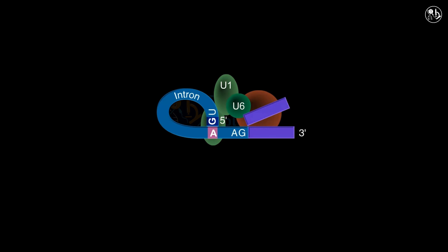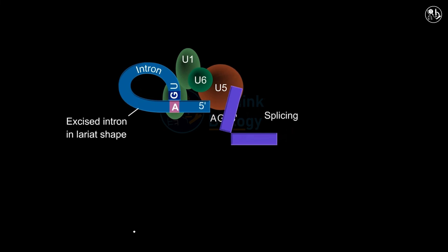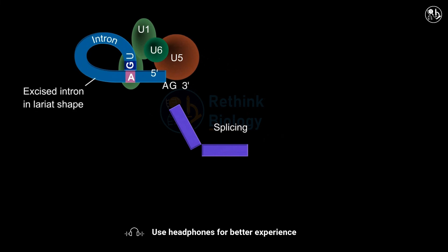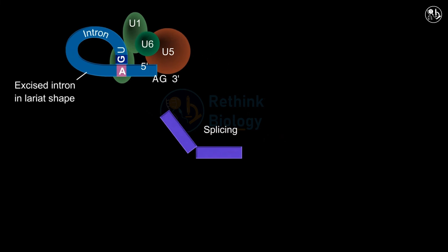Cleavage then occurs at the junction between the 3' AG and exon 2. Exon 1 and exon 2 are joined together in a 5' to 3' phosphodiester bond and the intron is released. U1, U2, U5, and U6 stay attached to the intron lariat and carry it to debranching enzymes in the nucleus.